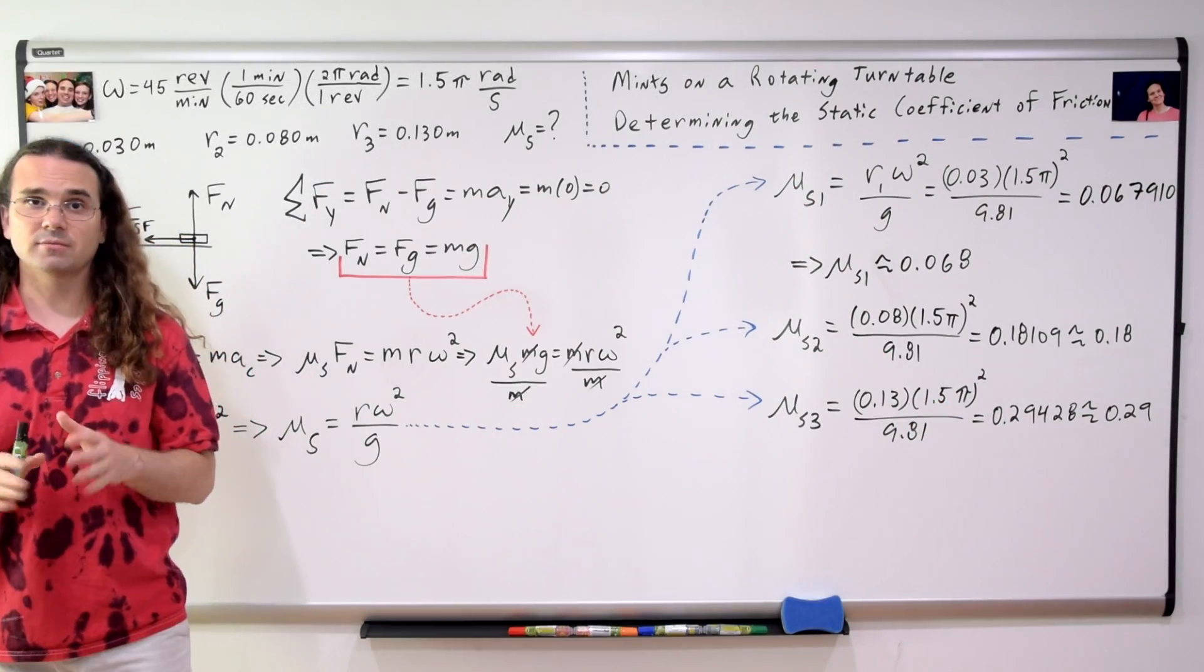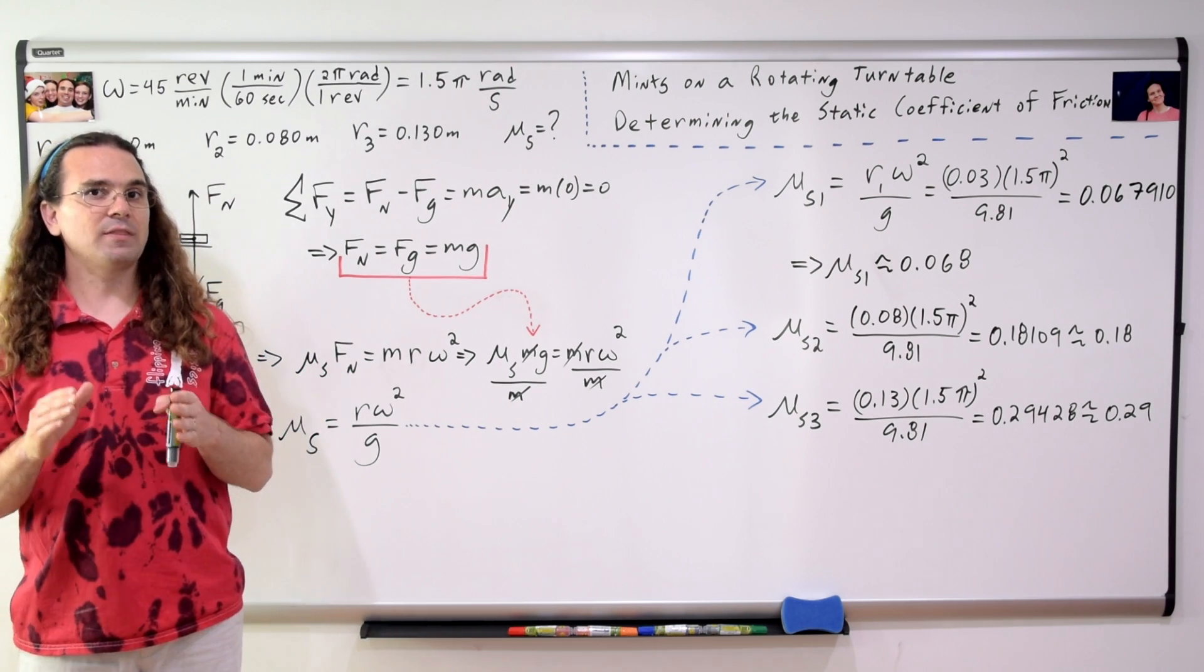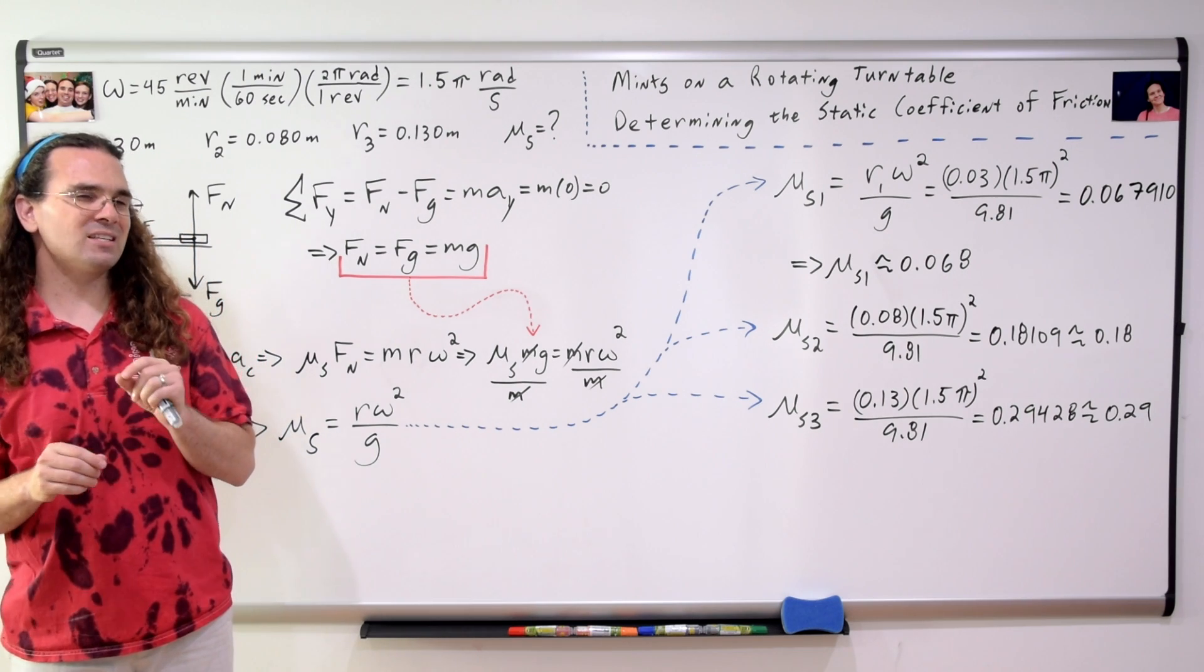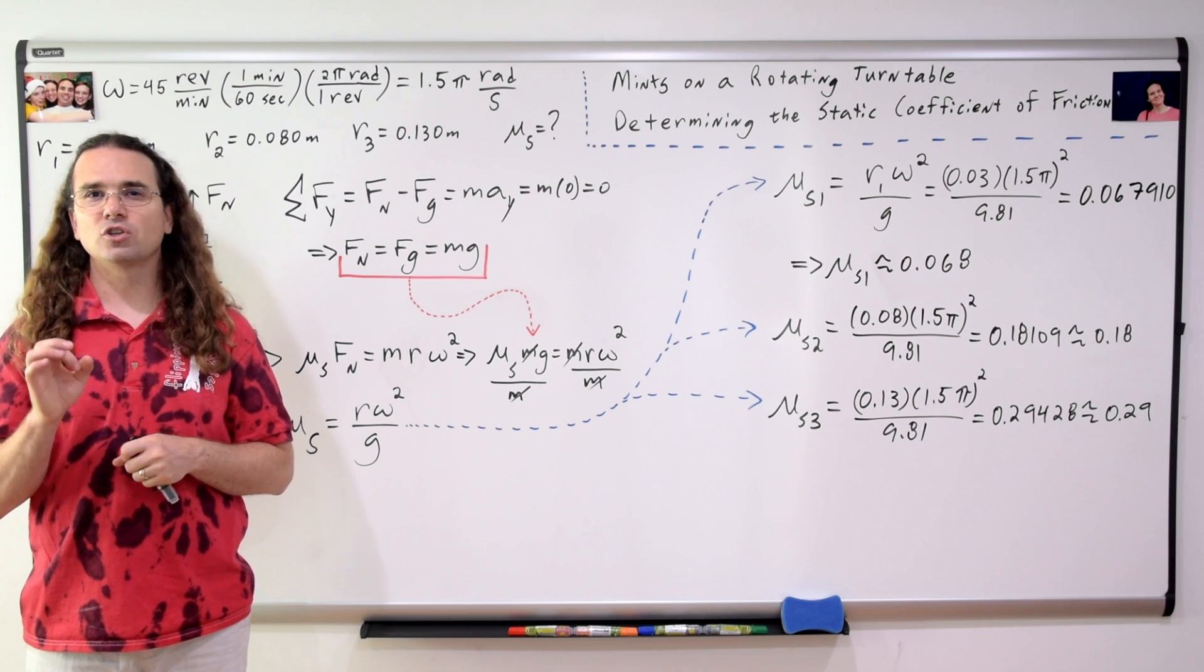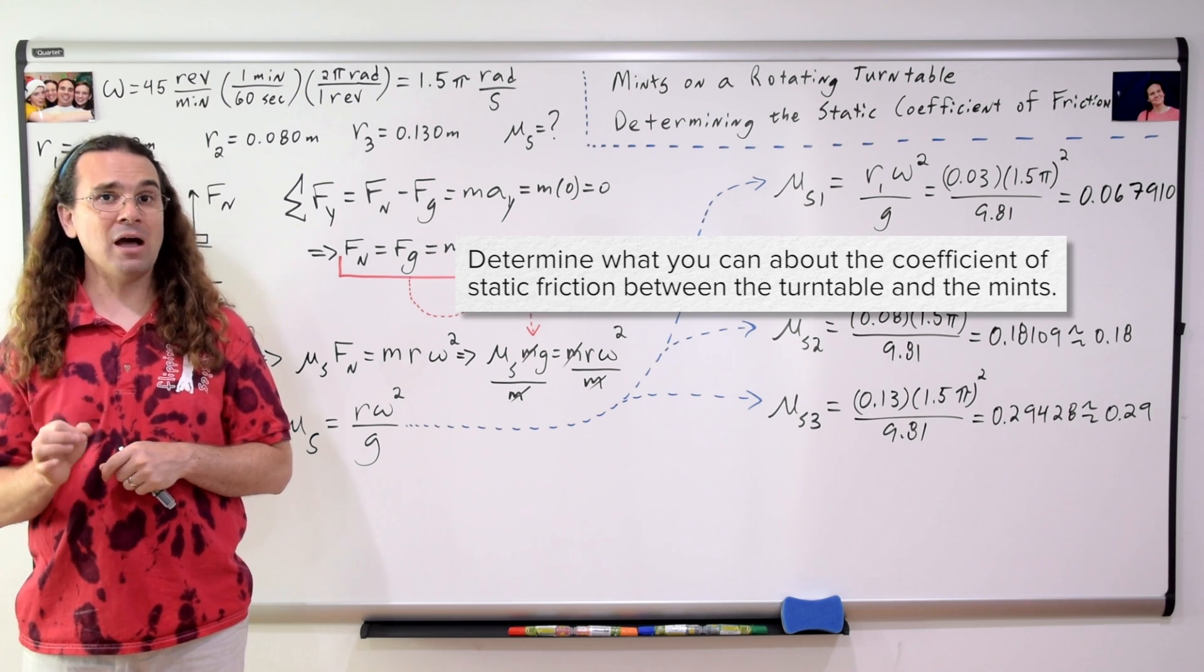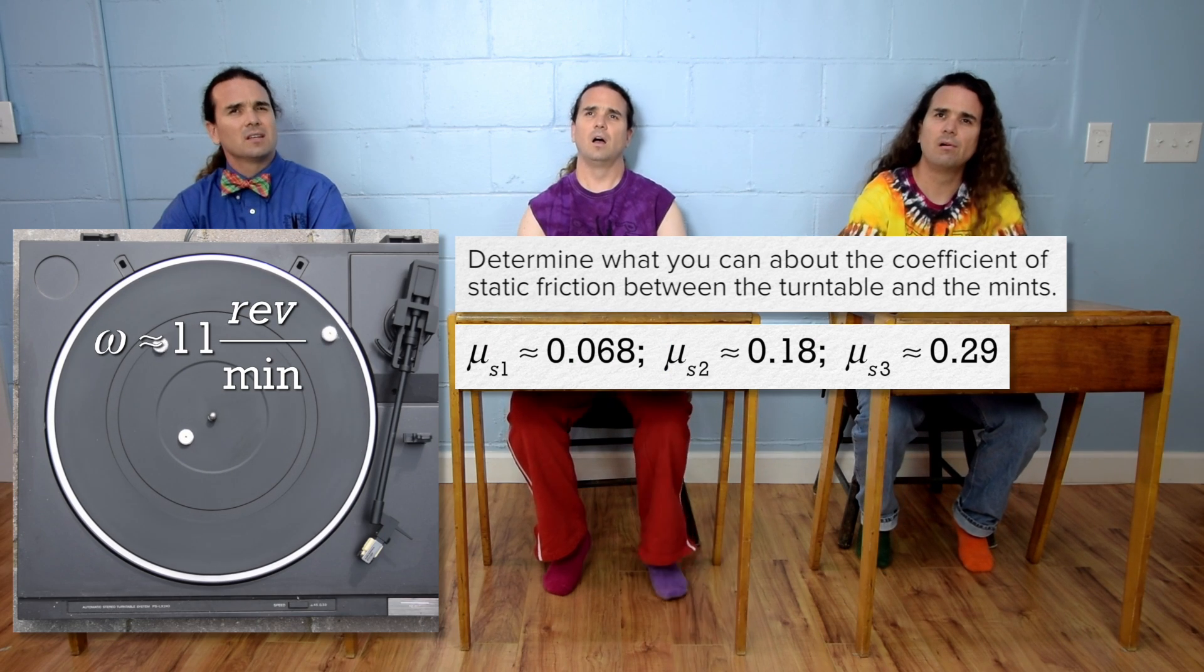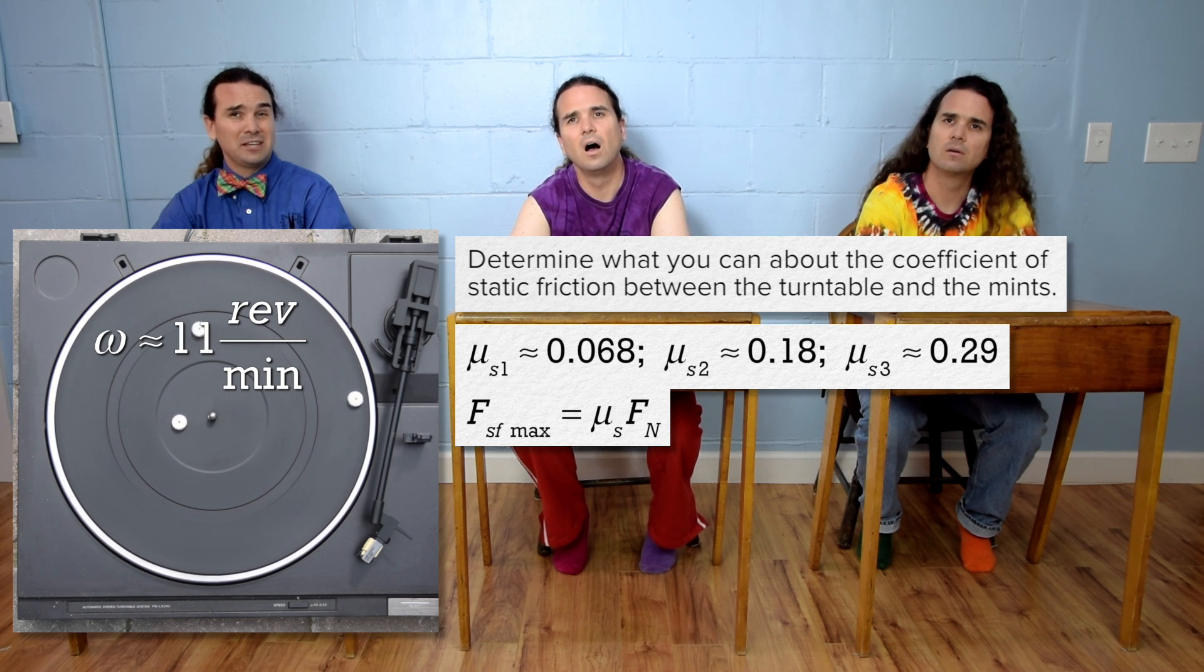Bobby, that's a good point. So, the coefficient of static friction between each mint and the turntable should be the same. And remember, the problem did not say determine the coefficient of static friction. It said determine what you can about the coefficient of static friction.